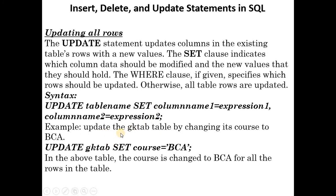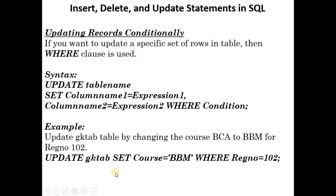For example, to update the gk_tab table by changing the course to BCA for all rows: UPDATE gk_tab SET course = 'BCA'. In this case the course column is updated to BCA for every row in the table.